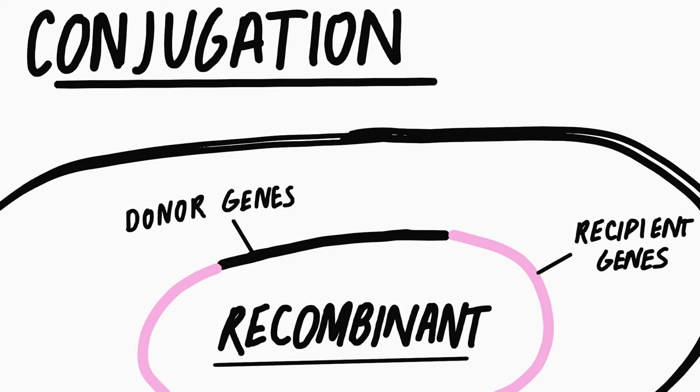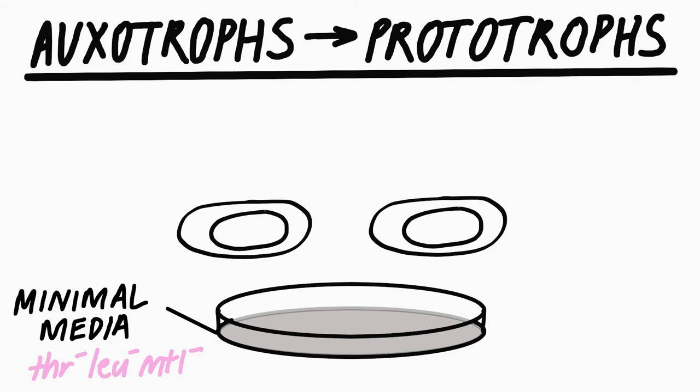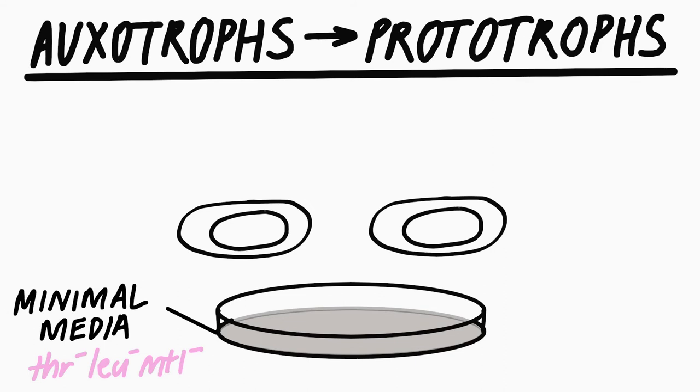The detection of these recombinants was done using auxotroph strains that are unable to synthesize different nutritional markers. Plating on minimal media lacking these nutrients has the effect of a sieve for recombinant progeny where nutritional deficiencies have been eliminated, named prototrophs.